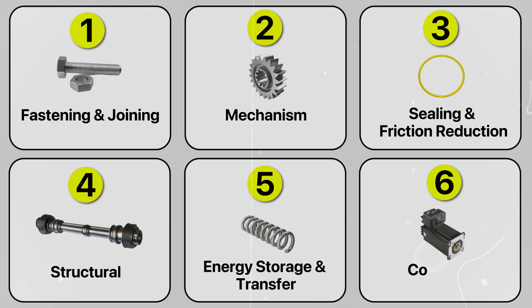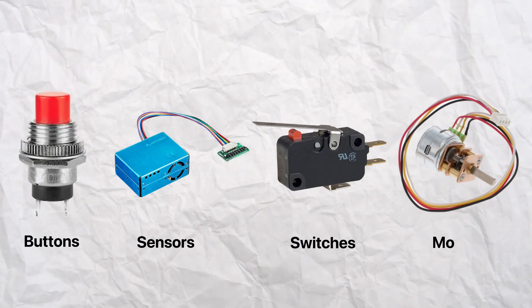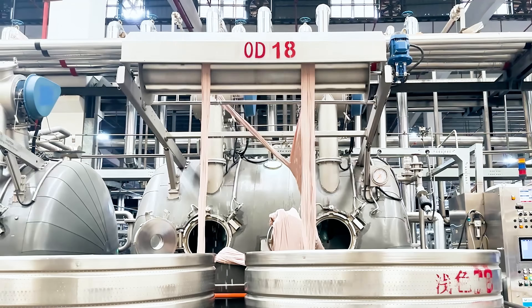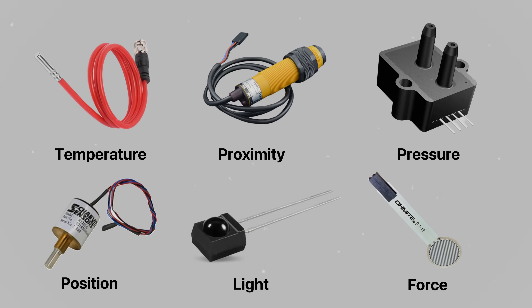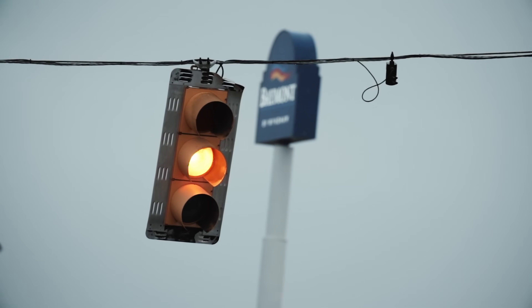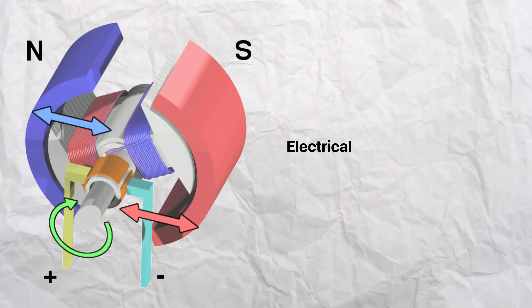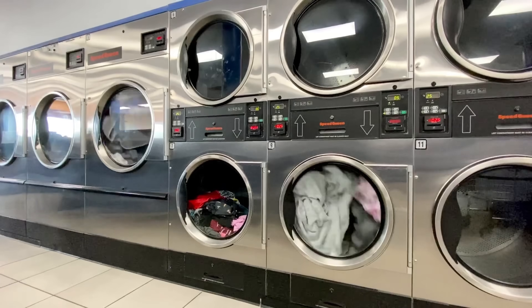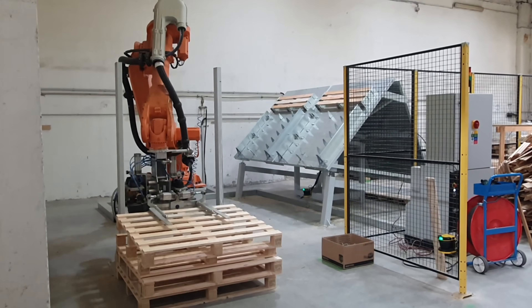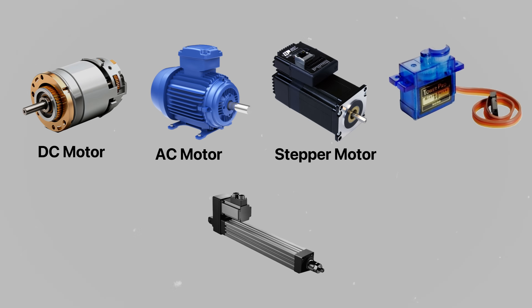The sixth and last category is control and automation components. This is a very broad category containing elements like buttons, sensors, switches, and motors, which enable precise operation, monitoring, and automation of mechanical systems. Sensors are devices that detect and respond to physical stimuli from the environment and convert those to electrical signals that can be processed by control systems. There are literally thousands of different types, including temperature, proximity, pressure, position, light, and force sensors. Almost anything you can think of contains sensors — automatic doors, faucets, ovens, smartphones, cars, and even traffic lights. Motors are another essential element that convert electrical energy to mechanical motion. They are used in hand drills, washers and dryers, vacuum cleaners, elevators, cars, and robotic arms. The key types of motors are DC, AC, stepper, servo, and linear.